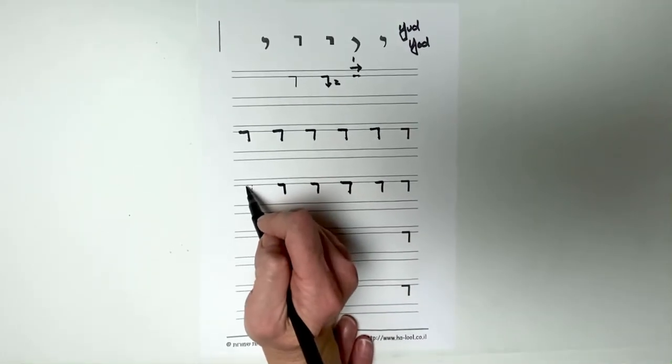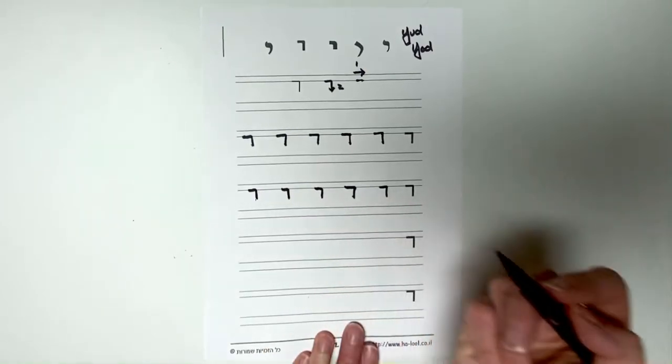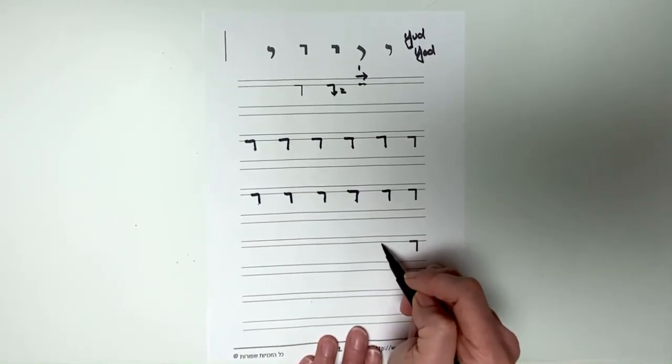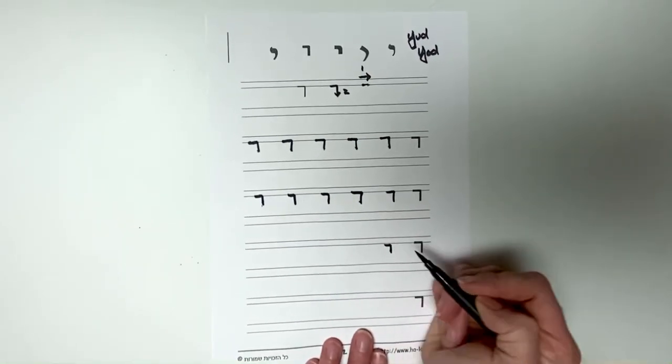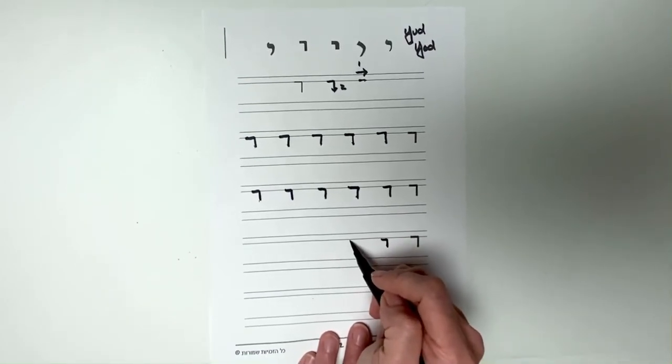You'll also see yud in the beginning of words like Yisrael, as well as Yaakov, which means Jacob.